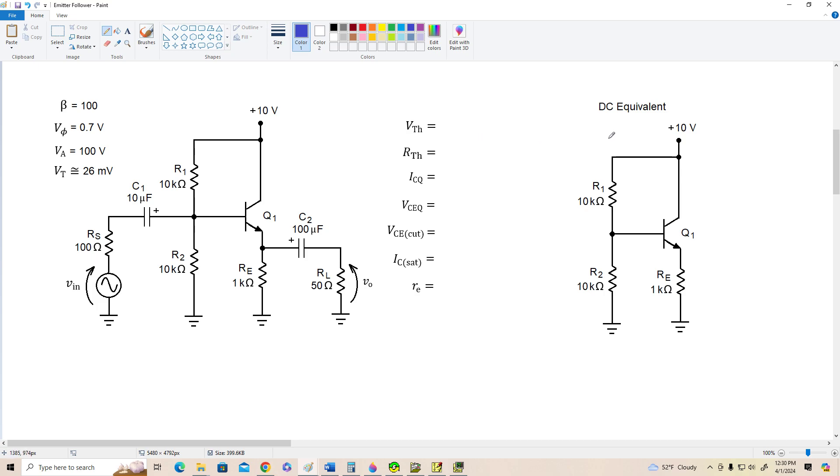The Thevenin voltage is going to be half of the supply voltage because we've got equal value resistors. So we've got VTH is 5 volts. RTH is going to be R1 in parallel with R2. 10K in parallel with 10K is 5K ohms.